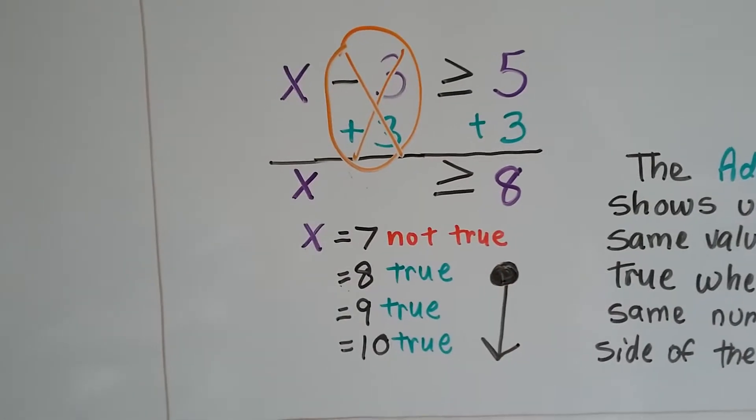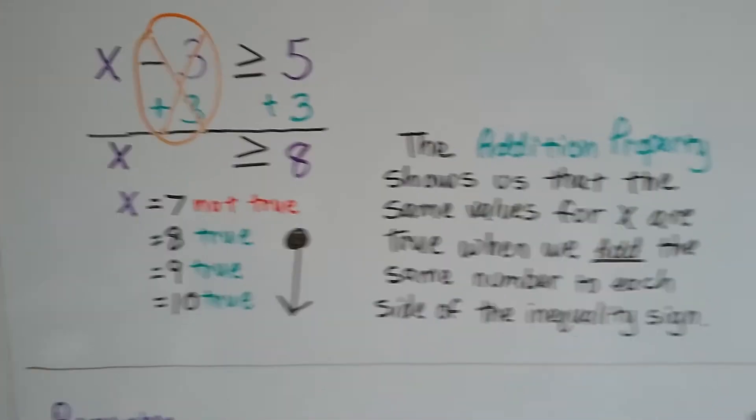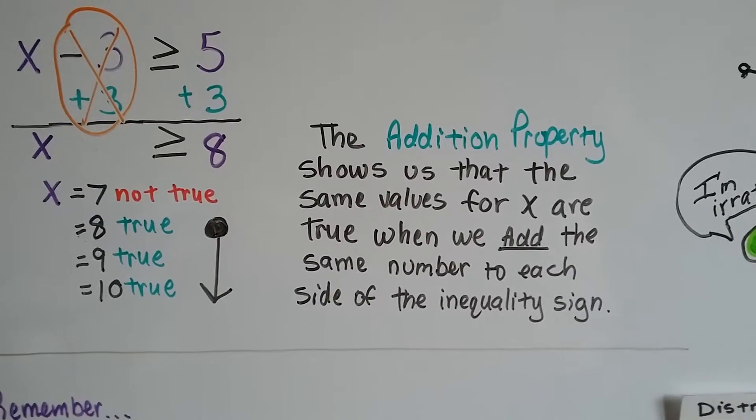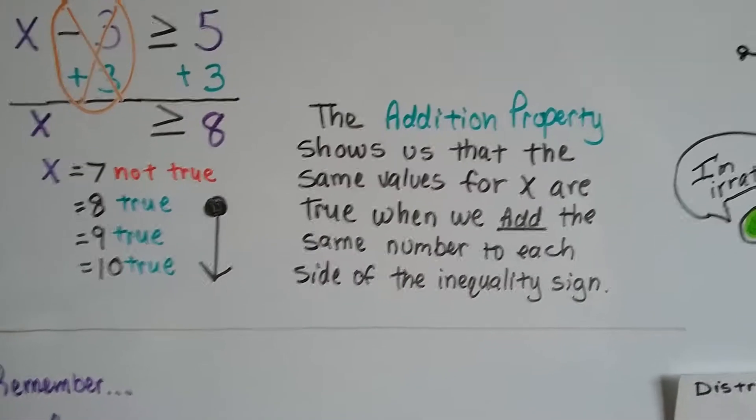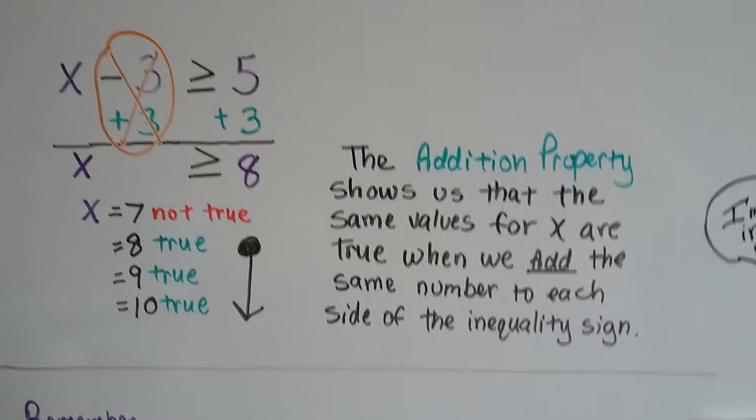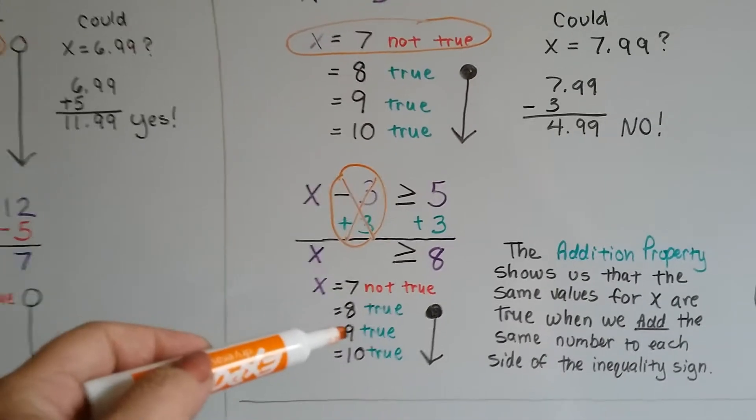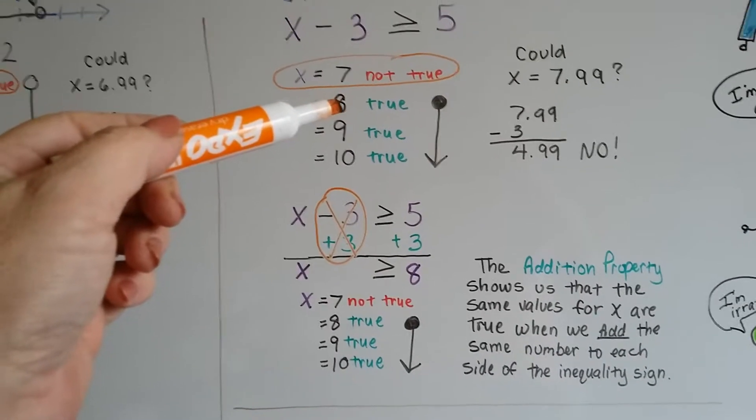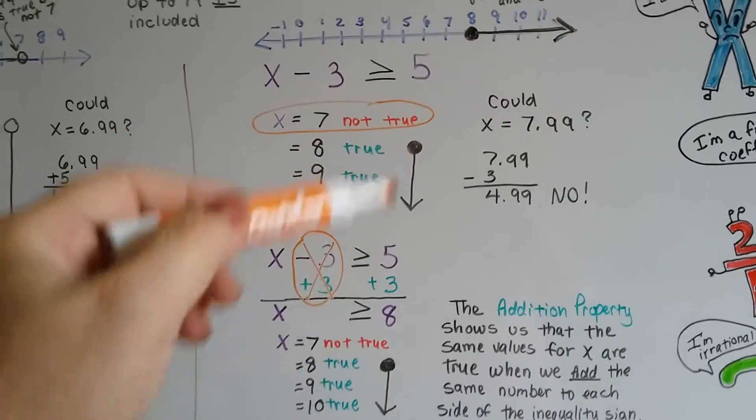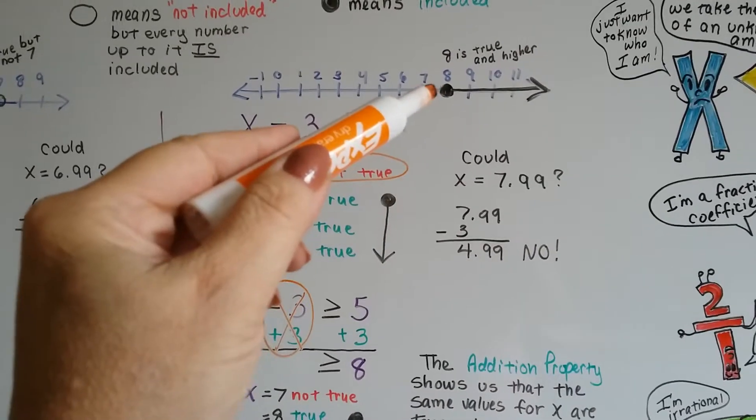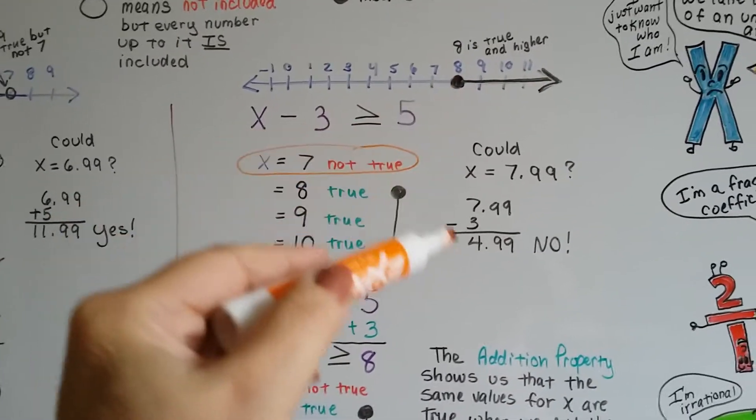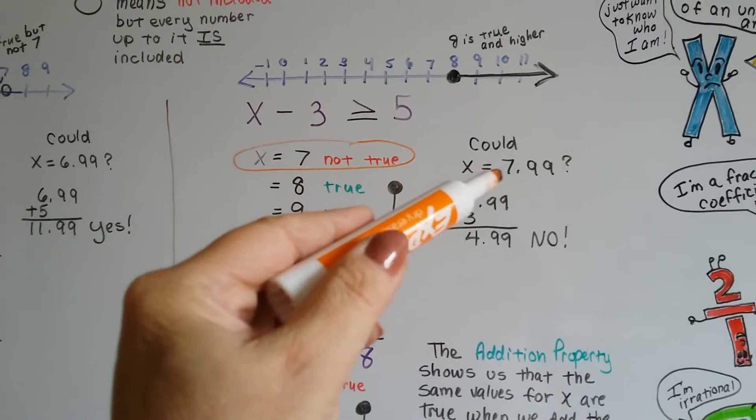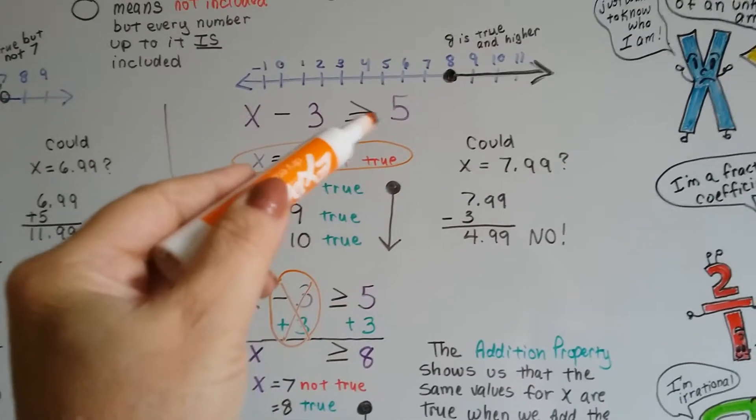So the addition property shows us that the same values for x are true when we add the same number to each side of the inequality sign. Whatever we had here is the same as up here. And we use the filled in dot to show that it includes the 8 and all the numbers higher. But we can't use 7.99, because it's still smaller than 5.